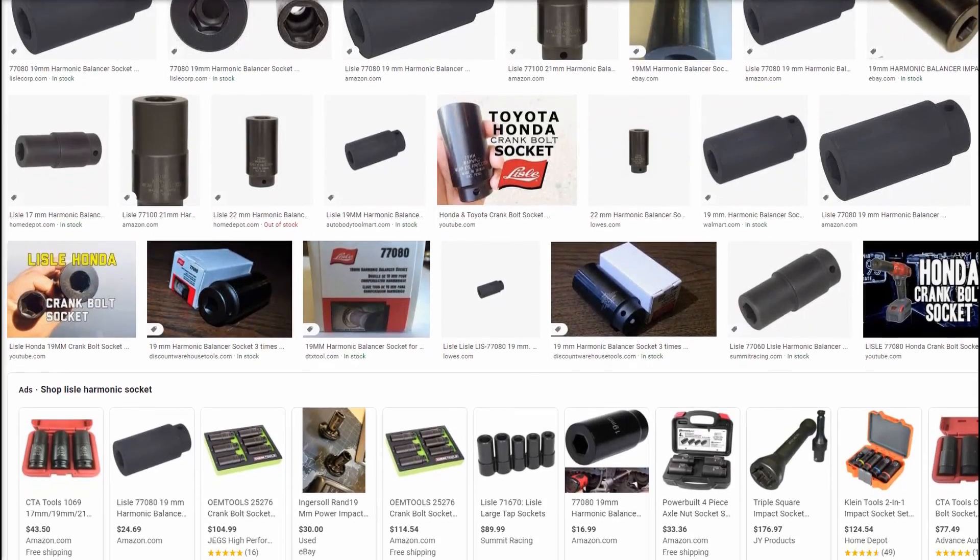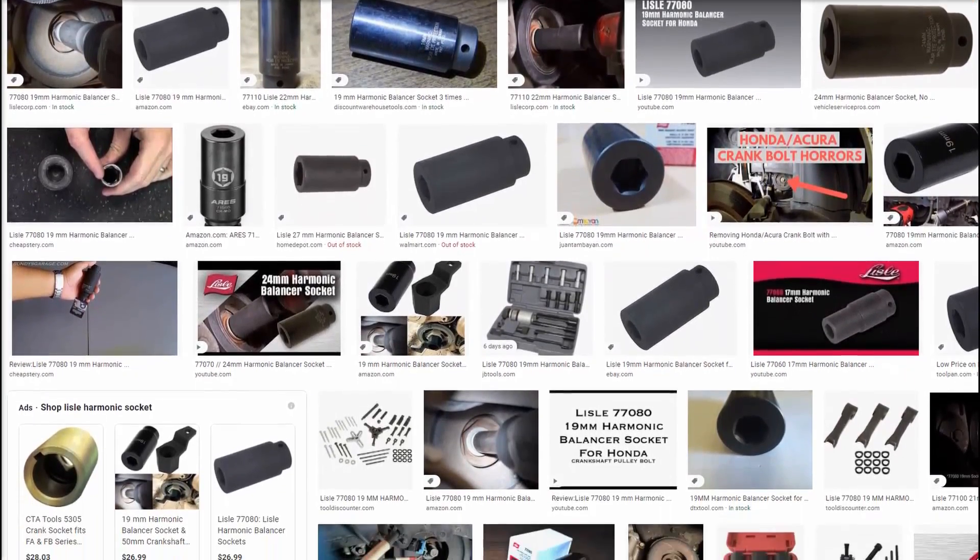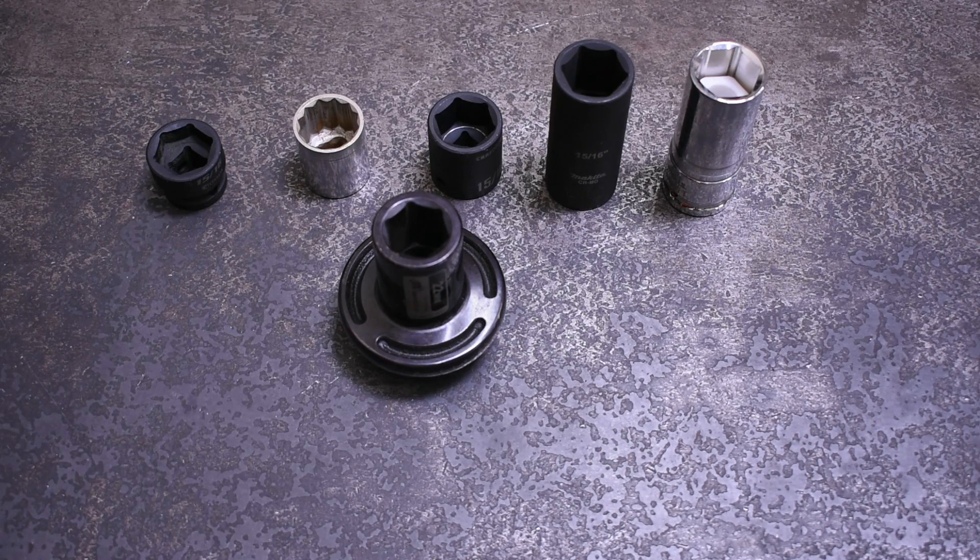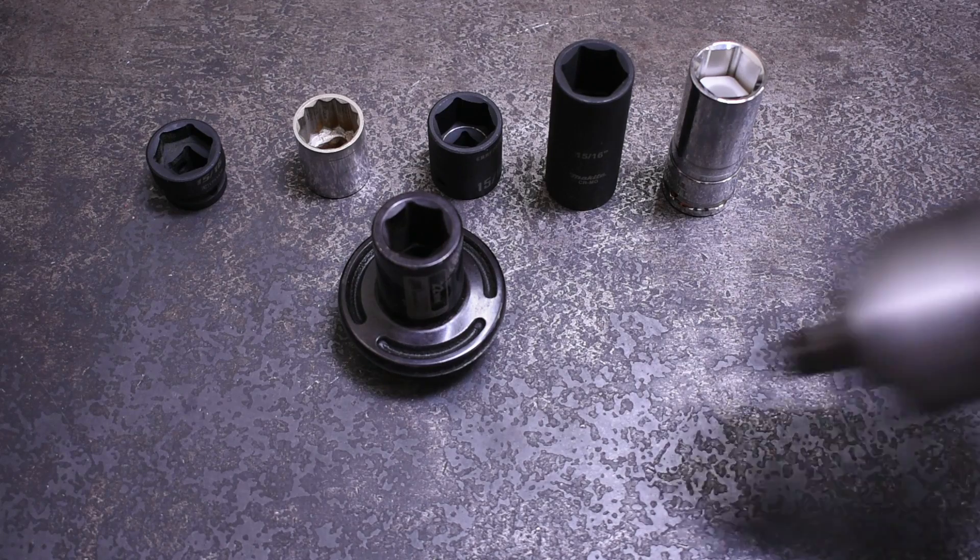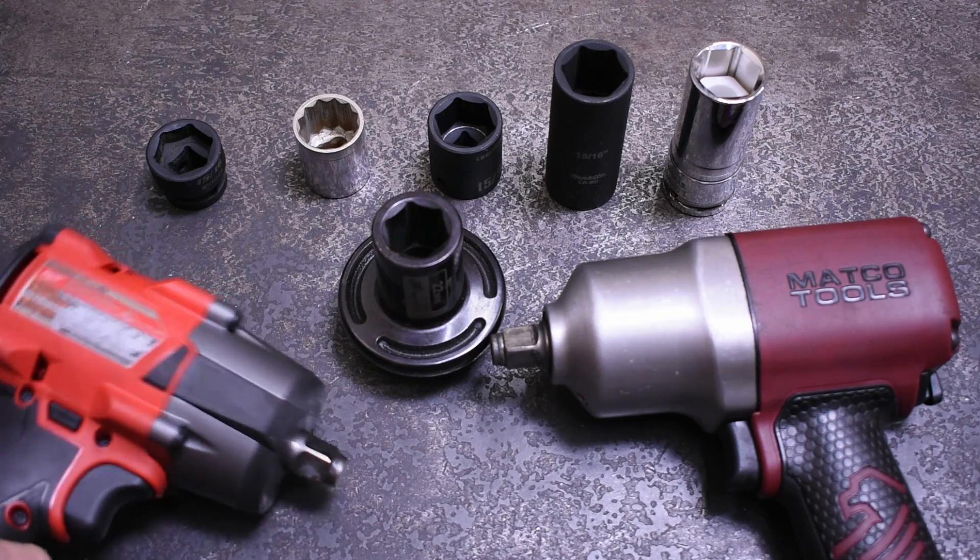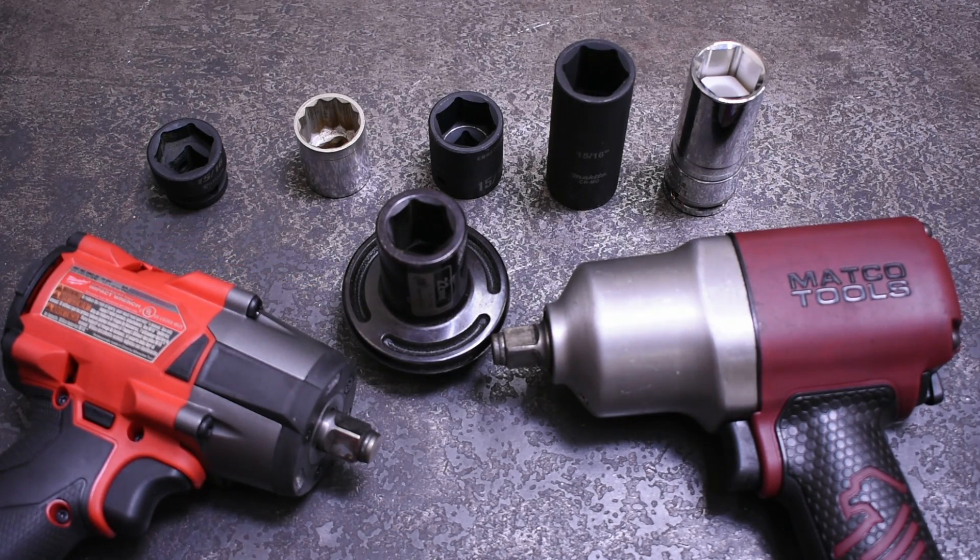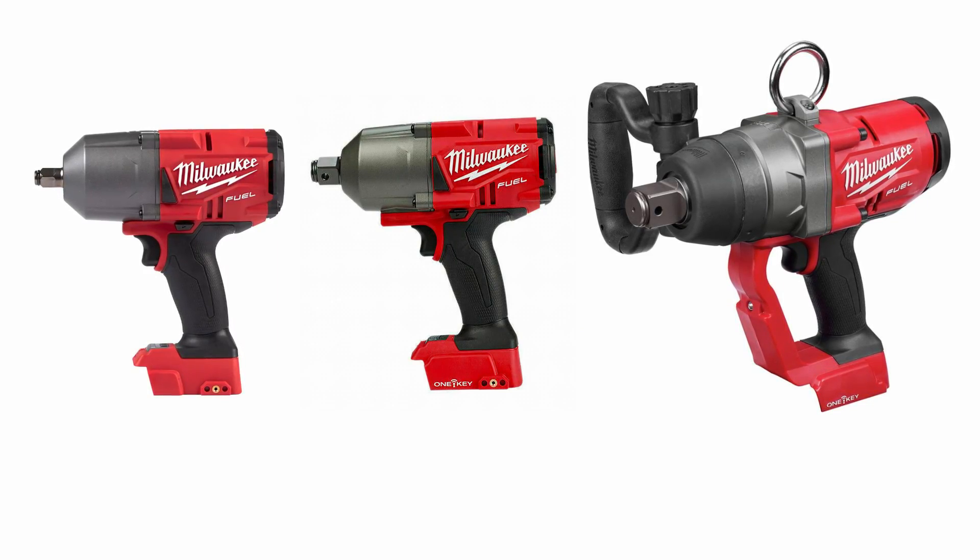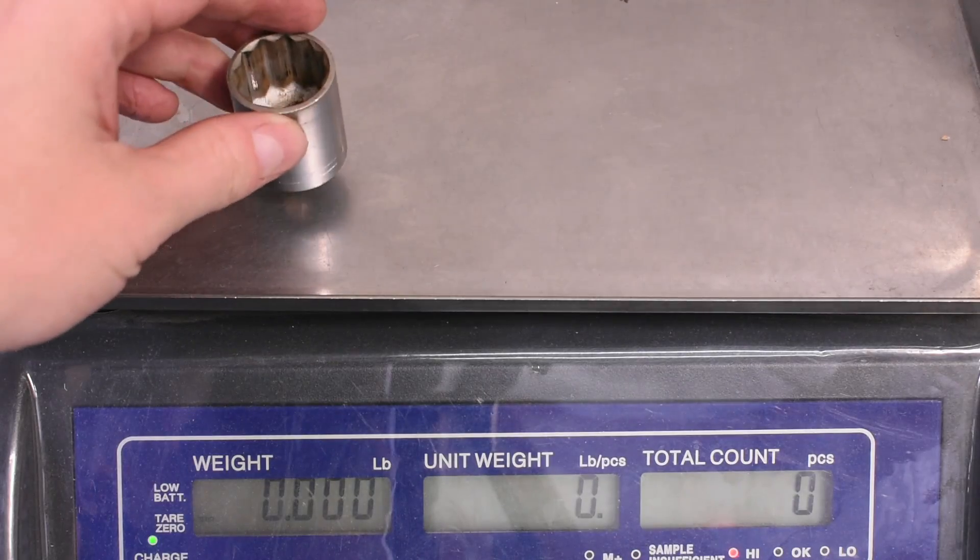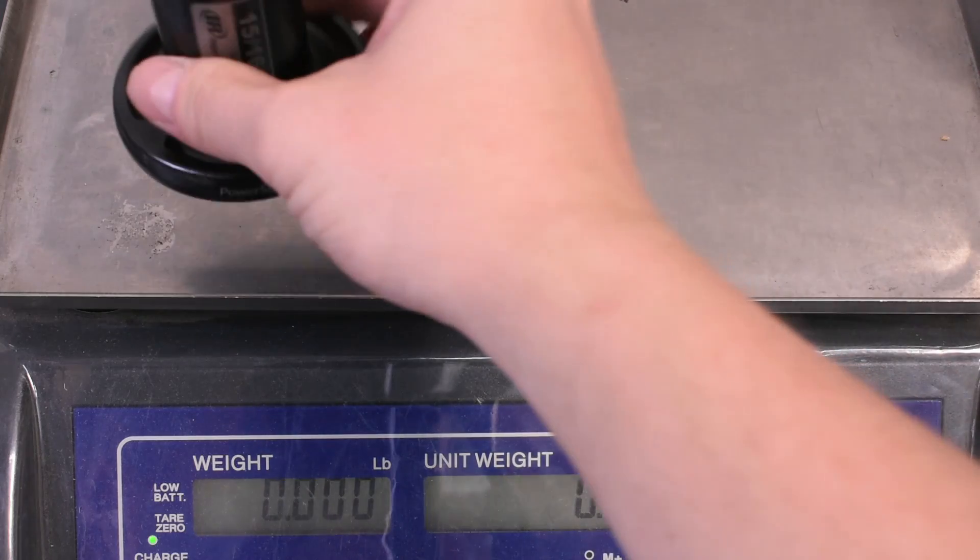Even though we were not able to test a thick wall style socket like Lisle's here today, we believe based on it using more mass but in a different way and all of the videos and testimonies we've seen that it works in much the same way as we've seen with the power socket today. While it may be socket size specific depending on you having the extra space to use it, weighted sockets with up to 25 percent real extra beans can make the hefty price some of these bring look pretty reasonable when you consider the size, weight, and cost brands charge you for impact tools that are 25 percent more powerful. If you like videos like this one, we'll be doing more of them so subscribe, hit like, and thank you very much for watching.